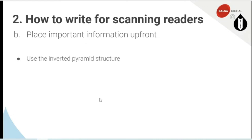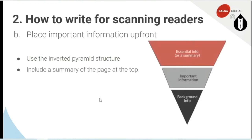The content writers in the room would have heard of this: the inverted pyramid structure. The inverted pyramid structure includes a summary or the most important information at the top of the page — essential information, then important information, then background information. It was probably first used in newspaper writing. If you pick up a newspaper, by the time you read the heading and the first paragraph, you've got a pretty good idea of the story — who, what, where, how. The why might be buried a bit deeper, but the important information is up front in your first paragraph.